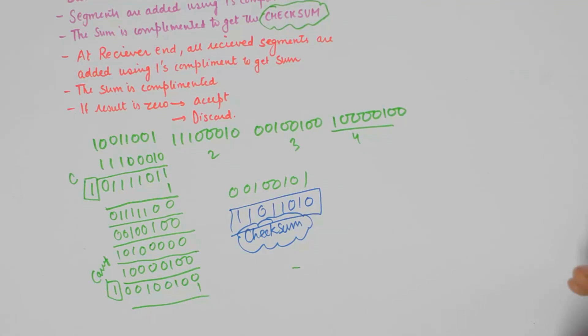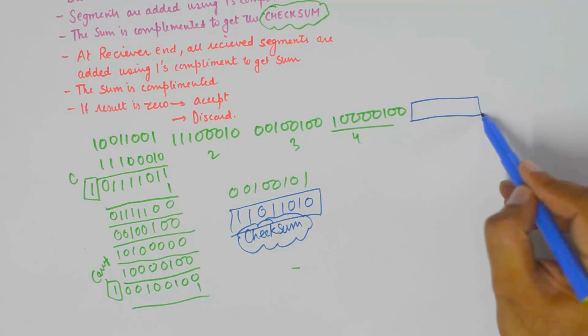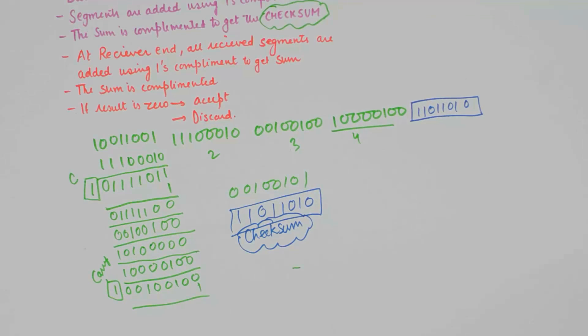Now, as discussed previously, this checksum is our overhead. Our payload is a 4 byte data stream. Along with the 4 byte data stream, we attach this checksum and send it to the receiver.